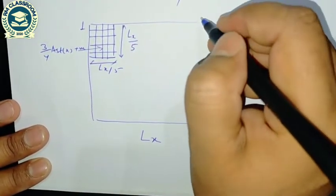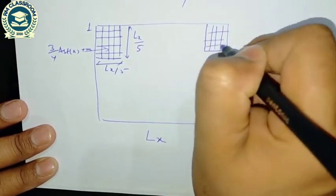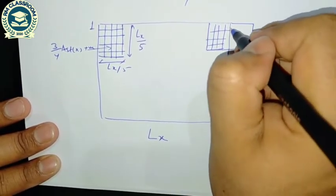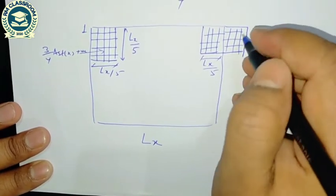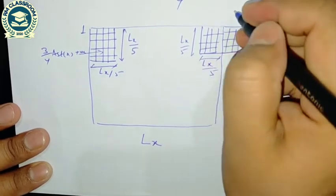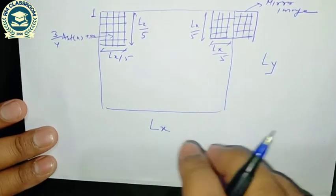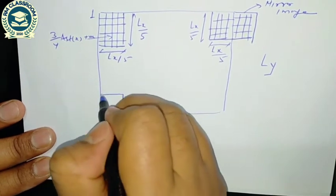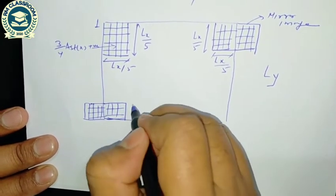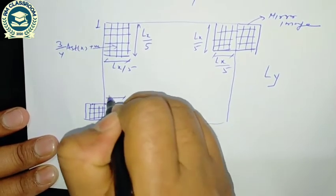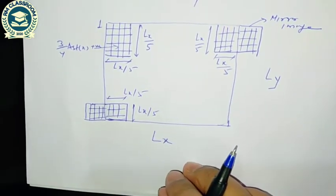Detailing the torsion reinforcement: assume this is LX and this is LY. The length of the reinforcement is LX/5 at each corner. The area of steel is (3/4) times AST x positive. This is provided at all four corners as mirror images of each other.